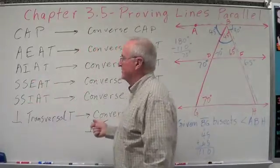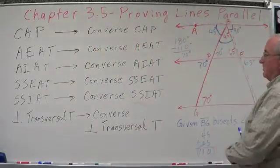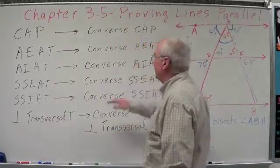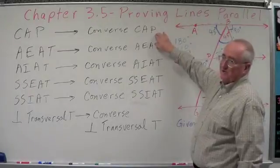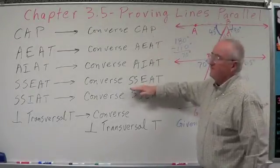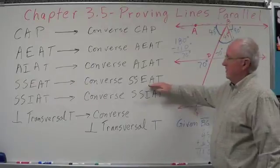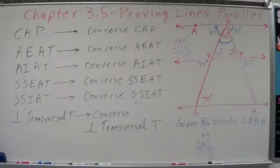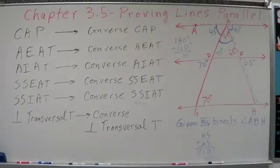So what we're doing is taking these theorems that establish corresponding angles, alternate interior angles, alternate exterior angles, same side exterior angles being supplementary, same side interior angles being supplementary, and perpendicular transversal relationships — and applying their converses. The converses say: if you have congruent corresponding angles, those lines are parallel; if you have congruent alternate interior angles, those lines are parallel; if same side exterior or interior angles are supplementary, they're parallel; and if a transversal is perpendicular to two lines, those lines are parallel.